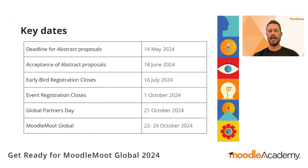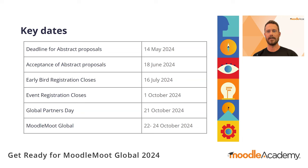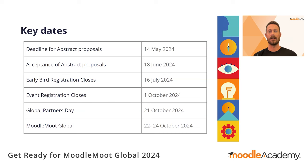This year the jam sessions are being integrated into the main event, so there is no pre-conference. There's just the global partners day on the Monday for Moodle certified partners, service providers and certified integration partners. For the rest of us, the event will start on the Tuesday, the 22nd of October, and run until Thursday. Remember that all dates are for midnight in local Mérida time, so make sure you don't miss the deadline when converting to your own time zone.